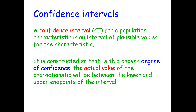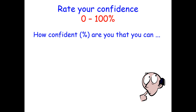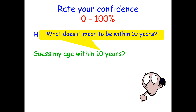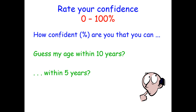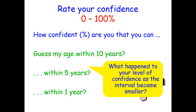Let's do a little activity. Rate your confidence from 0 to 100%. How confident are you that you can guess my age within 10 years? Within 10 years means either 10 years below or 10 years above, so that's a 20-year interval. How confident are you that you can do it within five years? And what about within one year? What happened to your level of confidence as the interval became smaller? Did your level of confidence go down as well?